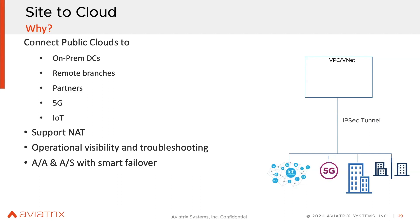There is no central place where you can manage and operate those branches and connect them to a VNet. Our solution allows you to connect any site — it could be an on-prem data center, a remote branch, an SD-WAN branch, or even a cloud you want to connect to another cloud. It supports NAT, so you can do source NAT and DNAT, and it can also support overlapping IP addressing.